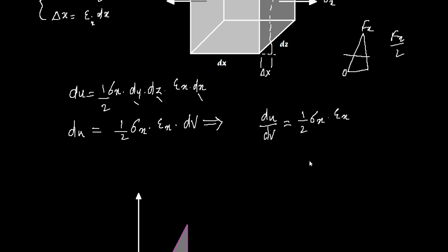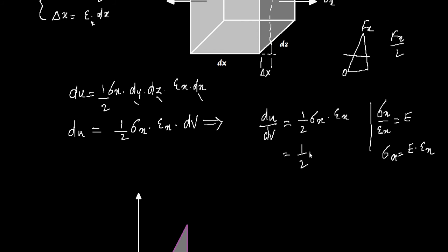From this equation, we can obtain the strain energy stored per unit volume. The internal energy per unit volume is: du/dV = (1/2) × sigma x × epsilon x — that is, stress times strain over 2. There is another relation: stress over strain equals Young's modulus E, so sigma x equals E times epsilon x. Substituting, we can write internal energy per unit volume as (1/2) × E × epsilon x squared.